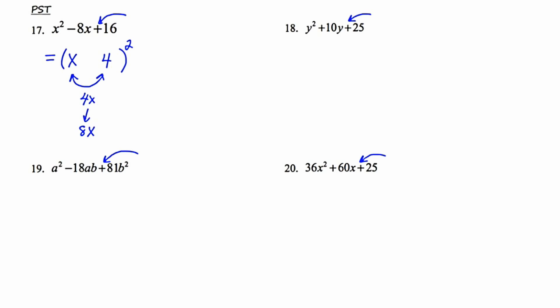The last thing is to put a plus or minus in the binomial. Because the middle term is negative, we're going to put a minus there. So this is an example of a perfect square trinomial — it's a very easy factoring technique if it passes the test.